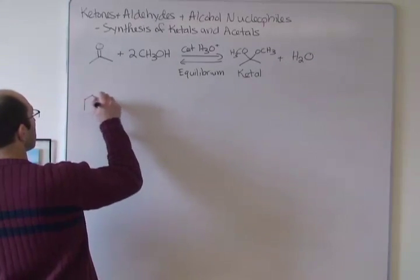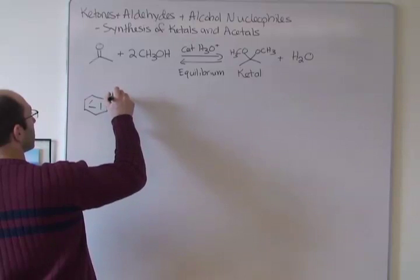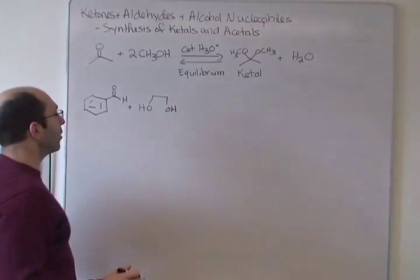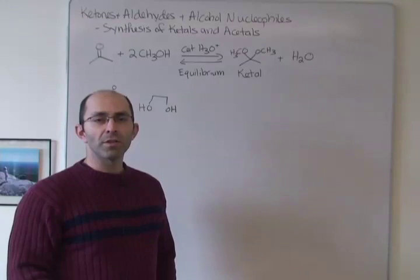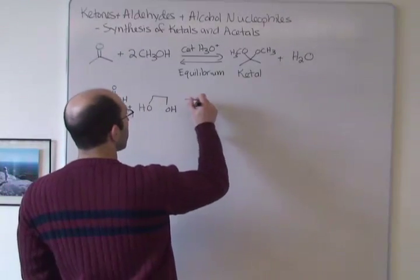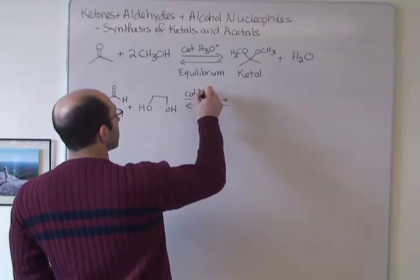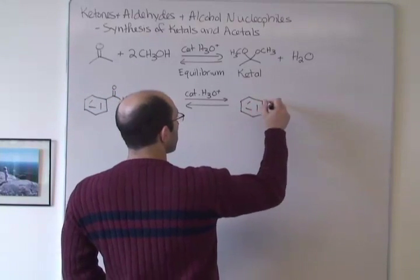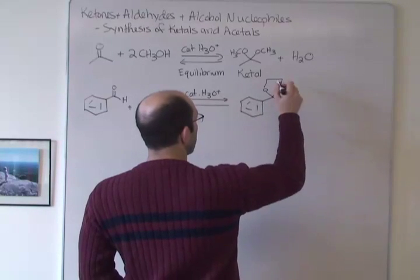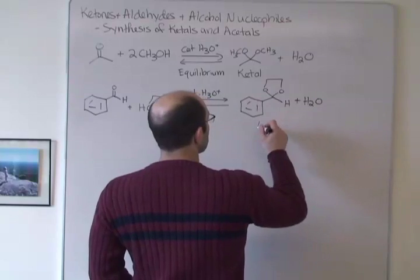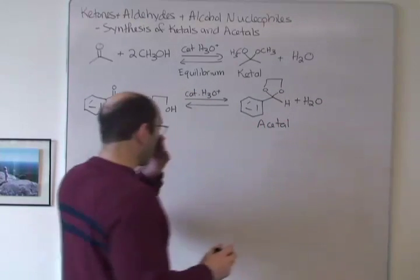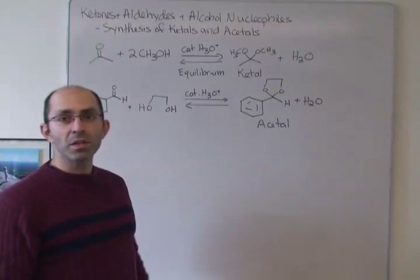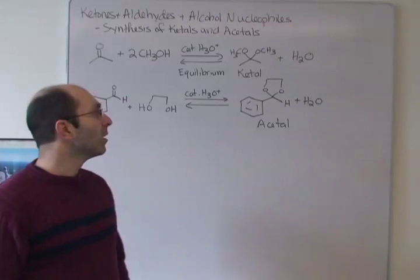We can also look at what happens with the reaction of an aldehyde. Sometimes we react with a molecule called a diol — a molecule that has two alcohols in the same molecule — instead of two separate alcohols. Again, it's going to be an equilibrium reaction with catalytic acid, and in this case we get a really interesting-looking acetal that's a ring. We control this the same way — essentially the same reaction, just two different names. A ketal comes from a ketone; an acetal comes from an aldehyde.